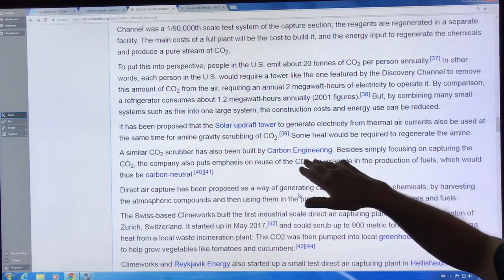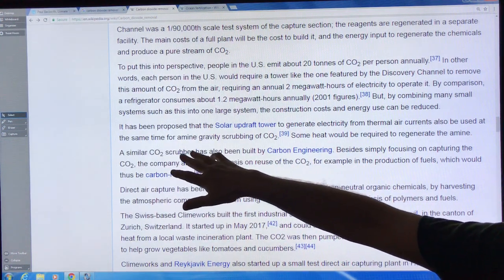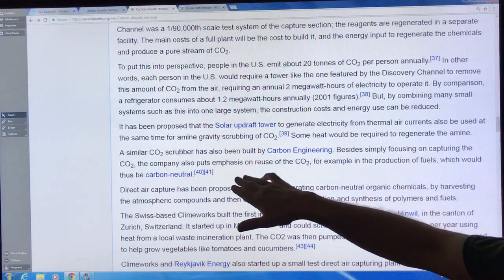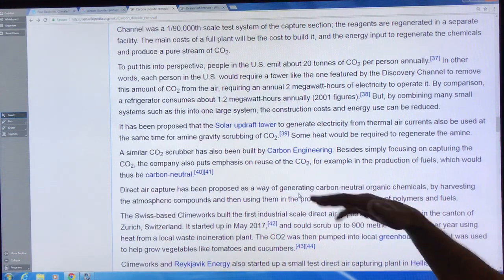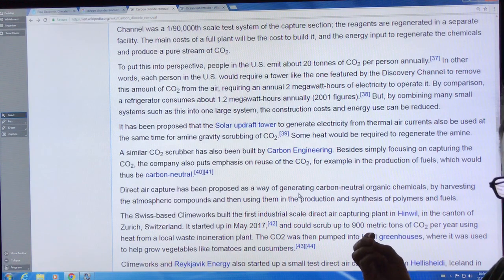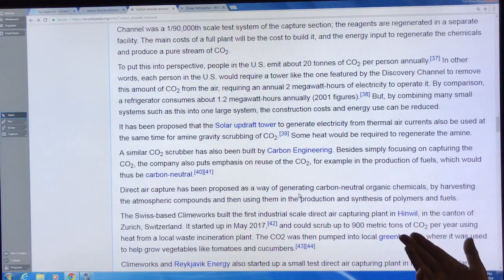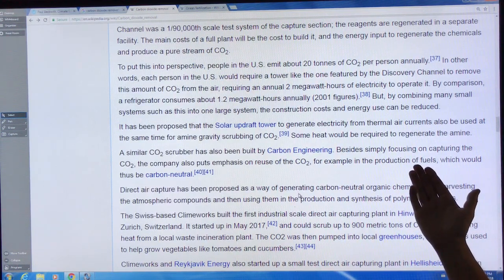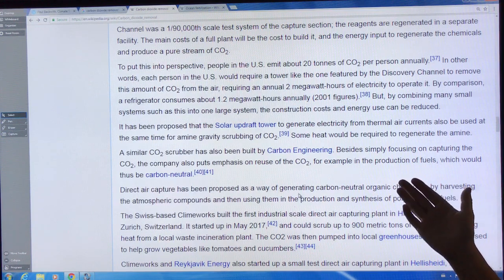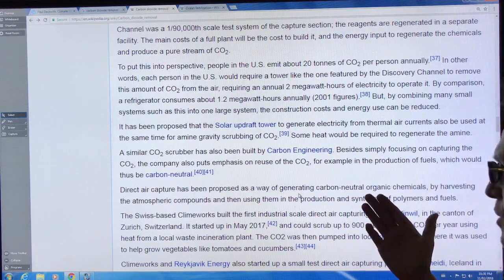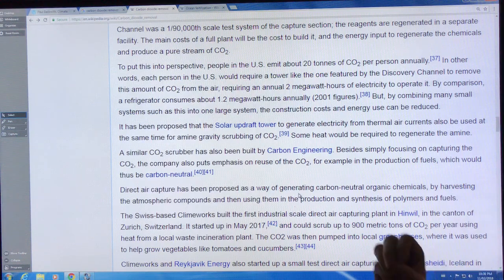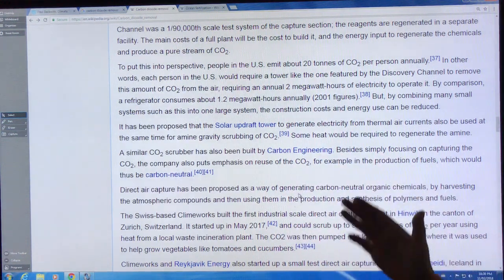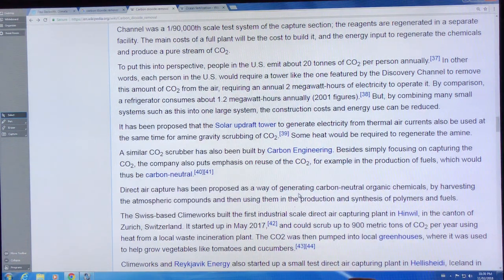Carbon Engineering has built scrubbers emphasizing what to do with the CO2 you've removed. You can use it in the production of fuels. If you can make a methanol or ethanol type fuel from the CO2, then when you burn that and recapture it, it'll be circular. It won't be producing more carbon than it's generating.